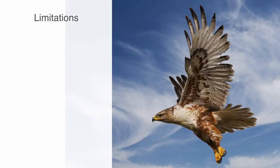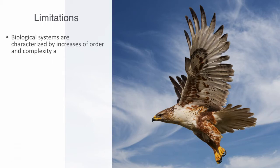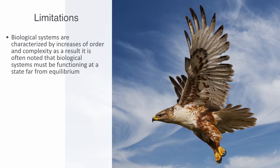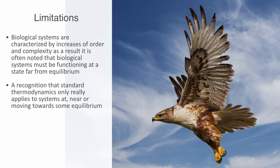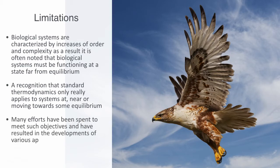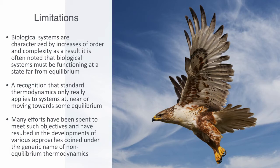The second law defines an increase in permutations and randomness over time, but biological systems are characterized by increases of order and complexity. As a result, it is often noted that biological systems must be functioning at a state far from equilibrium. This observation has led to the extension of standard thermodynamic theory through the development of non-equilibrium thermodynamics — a recognition that standard thermodynamics only really applies to systems at, near, or moving towards some equilibrium. Many efforts have been spent to meet such objectives, resulting in the development of various approaches coined under the generic name of non-equilibrium thermodynamics.